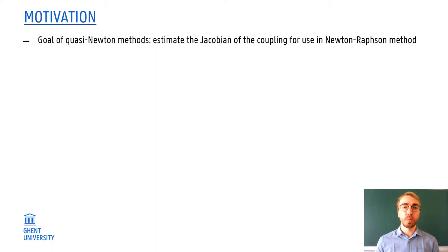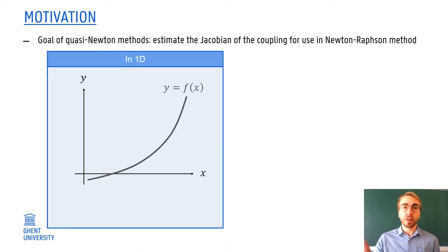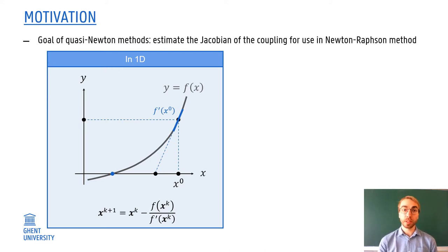In the preCICE documentation, it says that the goal of quasi-Newton methods is to estimate the Jacobian of the coupling. This is actually needed because the coupling schemes use some kind of Newton-Raphson method in order to find the solution. This can be explained easily in one dimension. There we have an unknown function f and the root which you want to find here indicated in blue. Starting from initial guess x0 and calculating the corresponding value and also the derivative, we can use the tangent line to find a new guess which is closer to our final solution. If you're sufficiently close, this will converge in a quadratic manner, which is very good. However, we need the derivative in order to do so, and in our case this will typically be unknown.